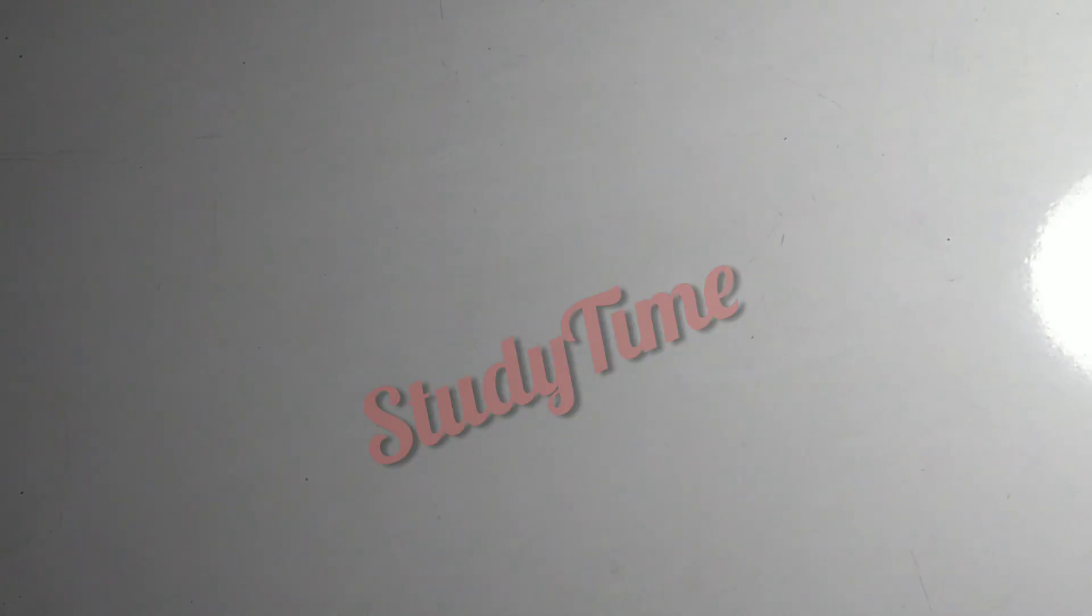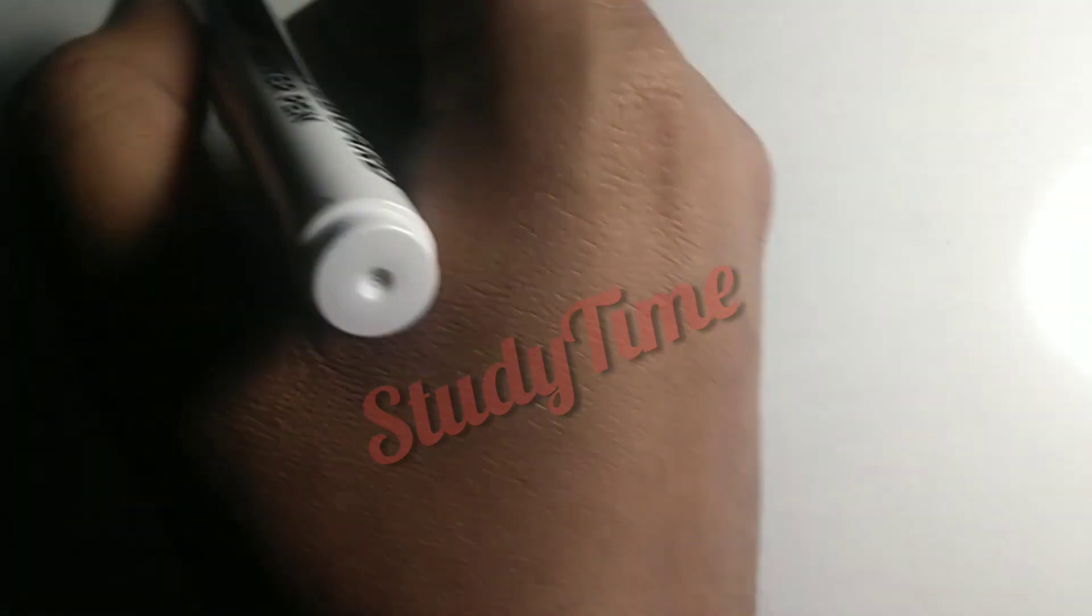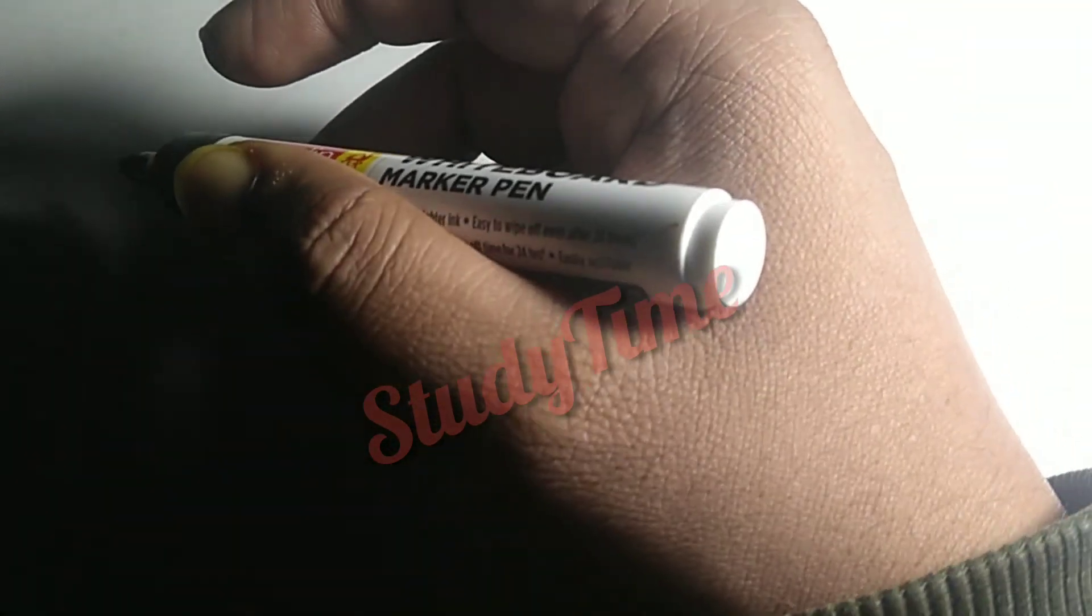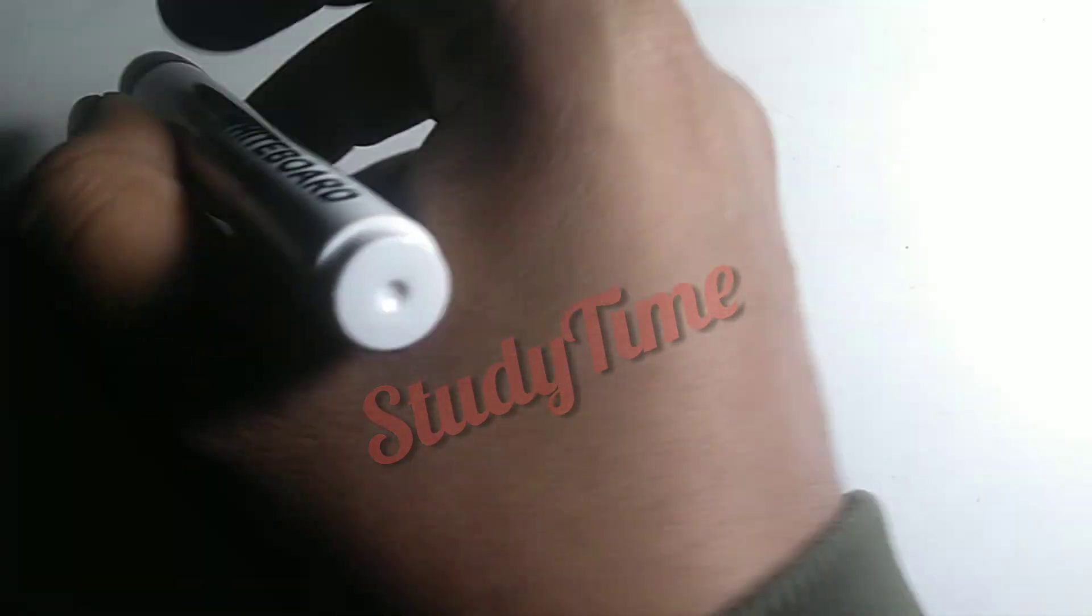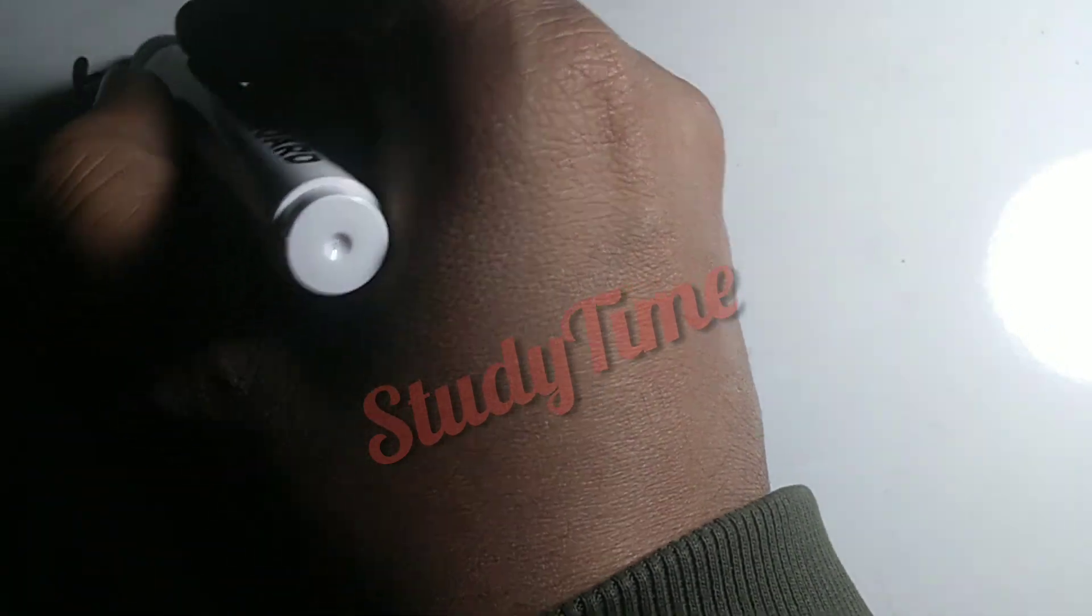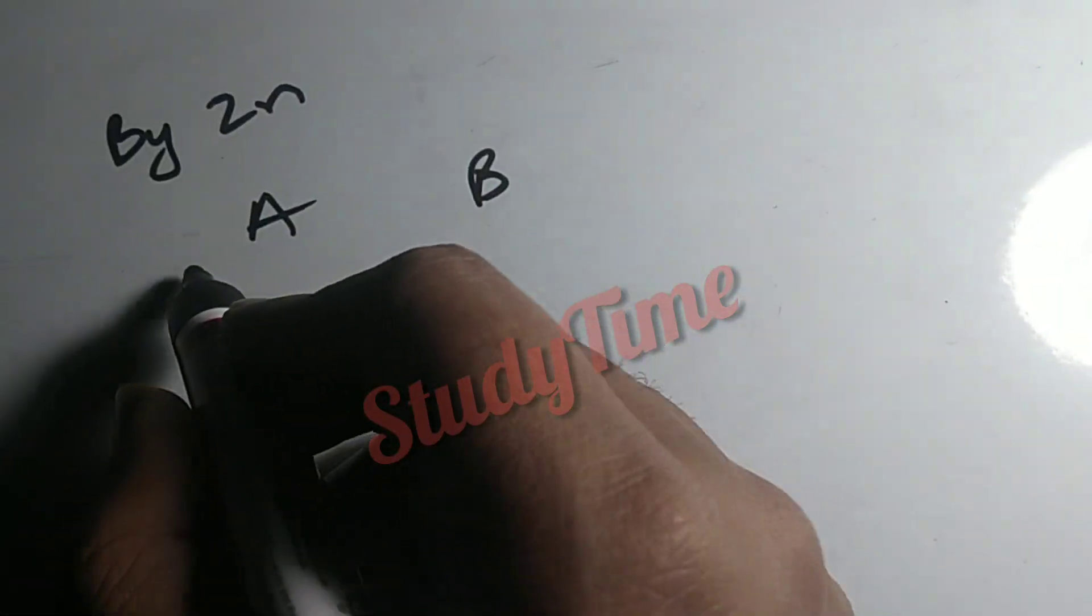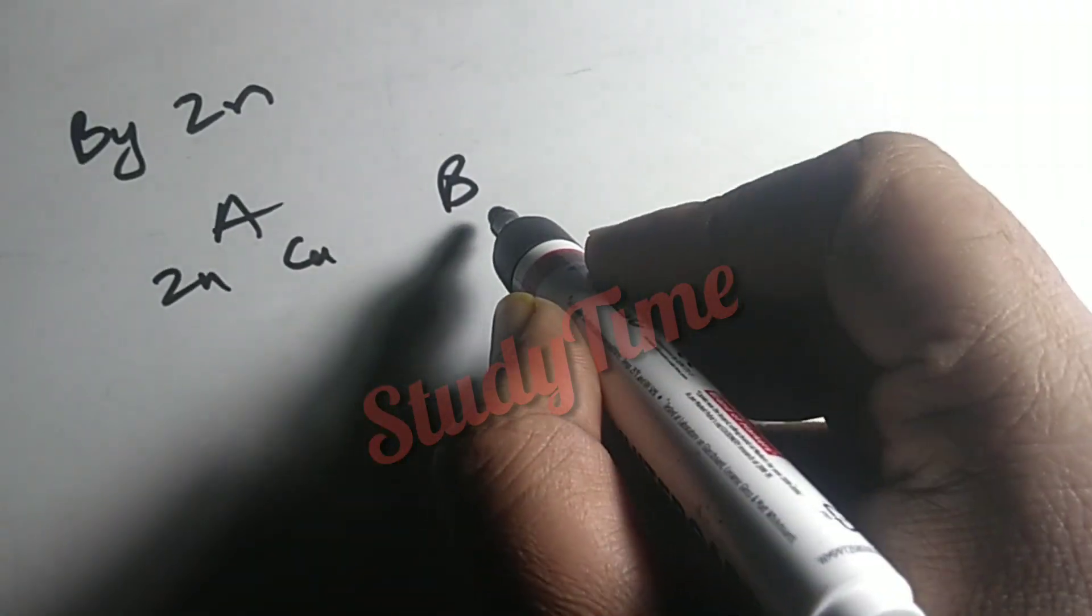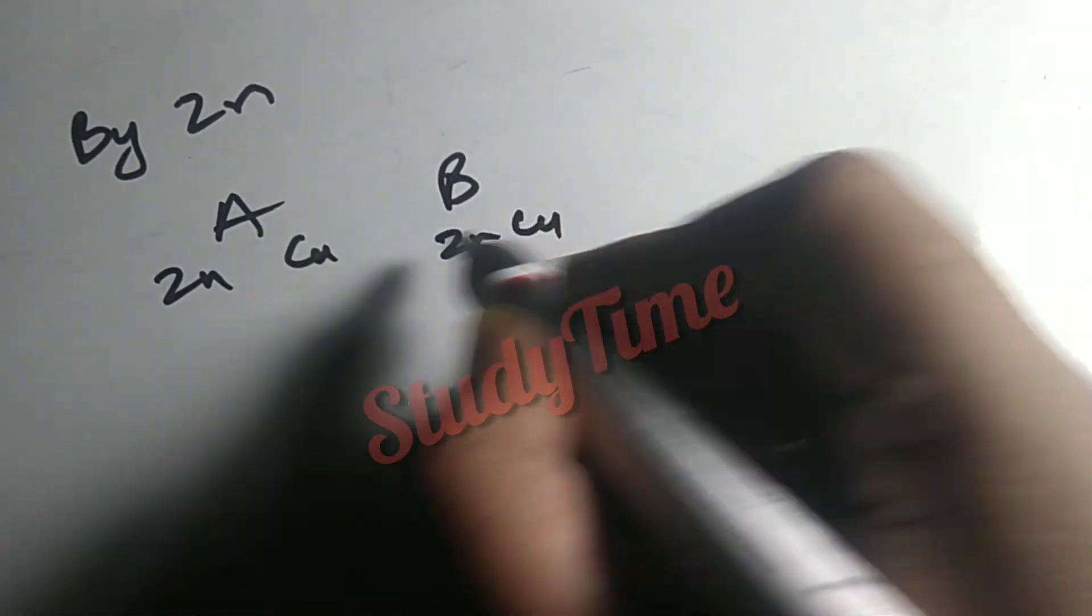How to do this question? We will add... I will add zinc. A and B, A and B. We have zinc and copper, zinc and copper in both alloys.